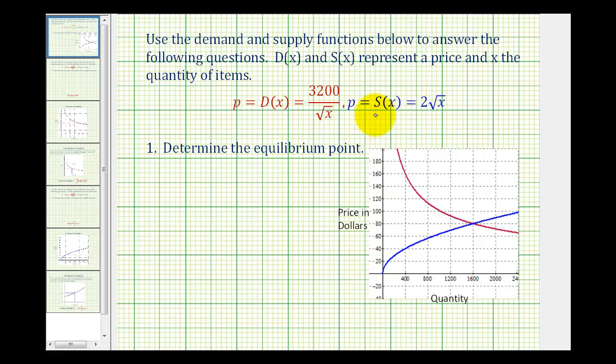Let's take a look at this graphically first. The demand function is graphically in red. Notice that it compares the quantity sold to the price per unit and normally the demand function is a decreasing function.